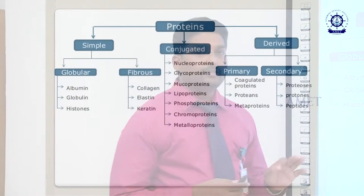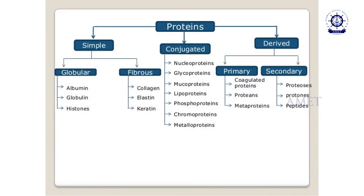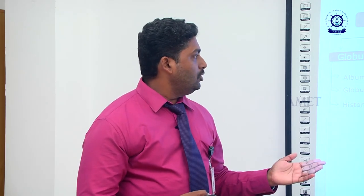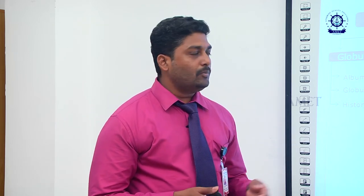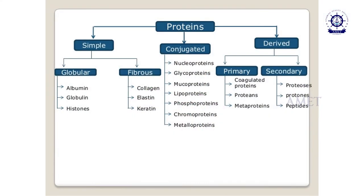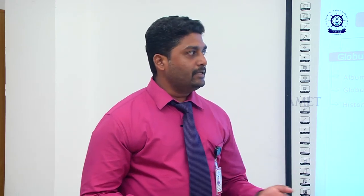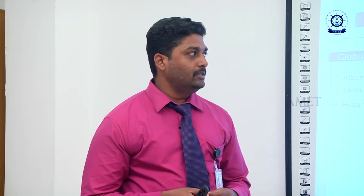Based on chemical nature and solubility, proteins are classified into three types: simple proteins, conjugated proteins and derived proteins. Simple proteins consist of two types — globular proteins (albumin, globulin, histones) and fibrous proteins (collagen, keratin, elastin). Conjugated proteins include nucleoproteins, glycoproteins, lipoproteins and phosphoproteins. Derived proteins are classified into primary proteins (coagulated proteins and metaproteins) and secondary proteins (proteose, proteomoproteins and peptides).